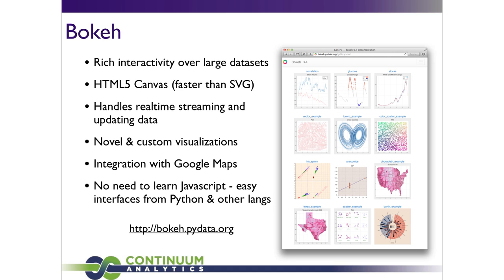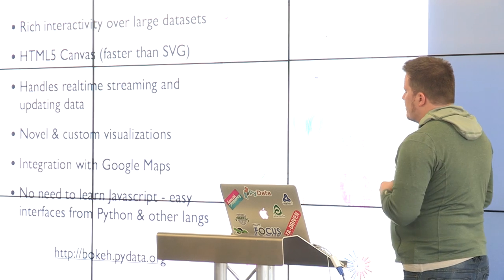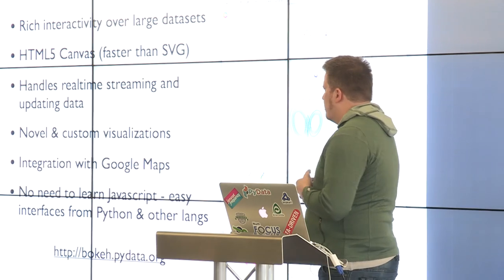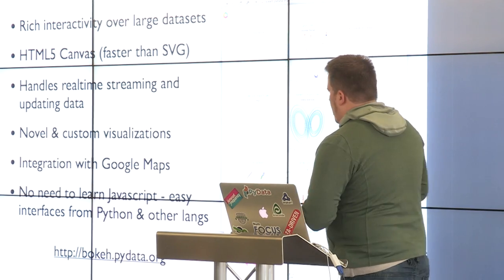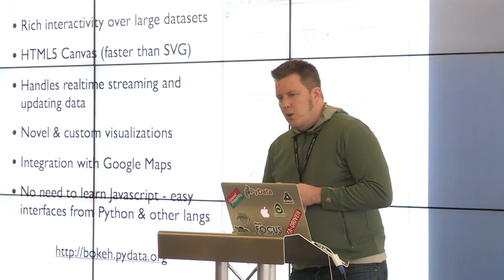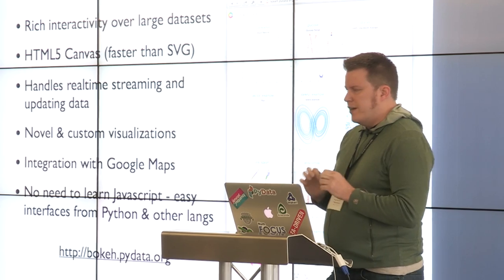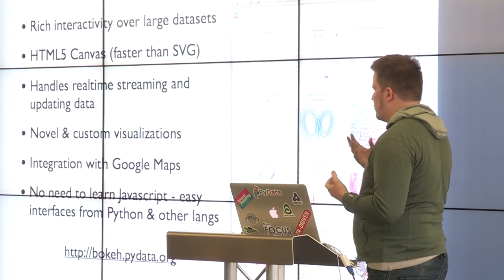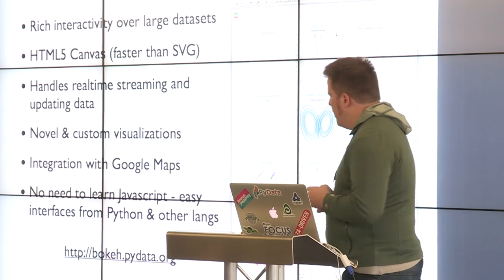A couple of notes about the implementation. It's not based on D3 — I get that question quite a bit. For performance reasons — the ability to plot perhaps 100,000 or several hundred thousand points at a time — we built from the ground up an HTML5 Canvas library. HTML5 Canvas is extremely performant. Because of this, we can handle streaming data and real-time data. The low-level composable abstractions mean we can create very novel and interesting visualizations.